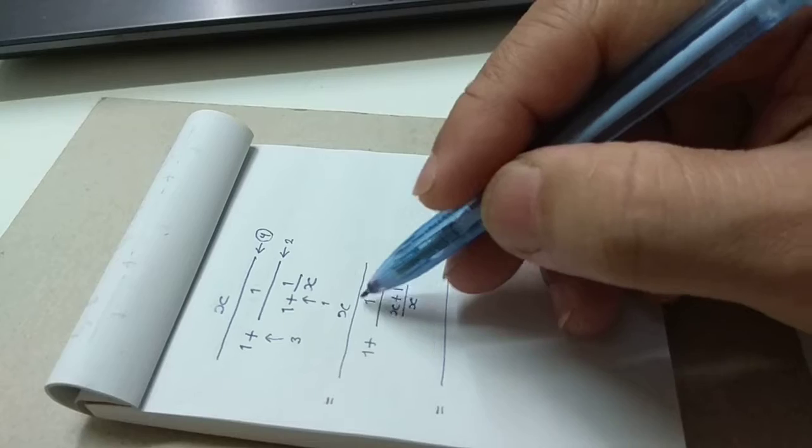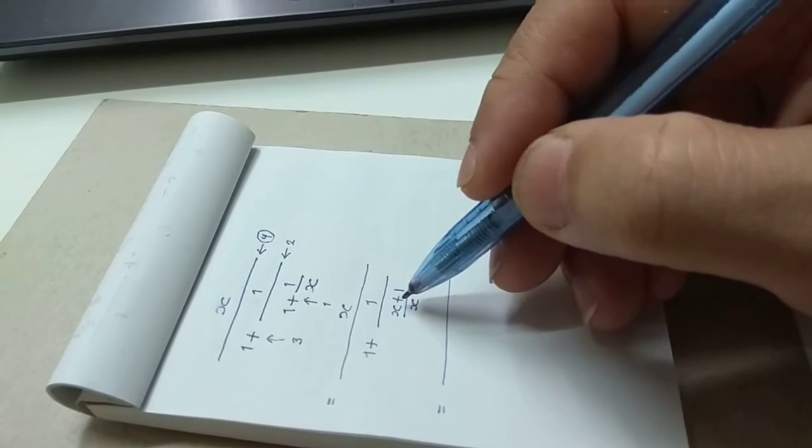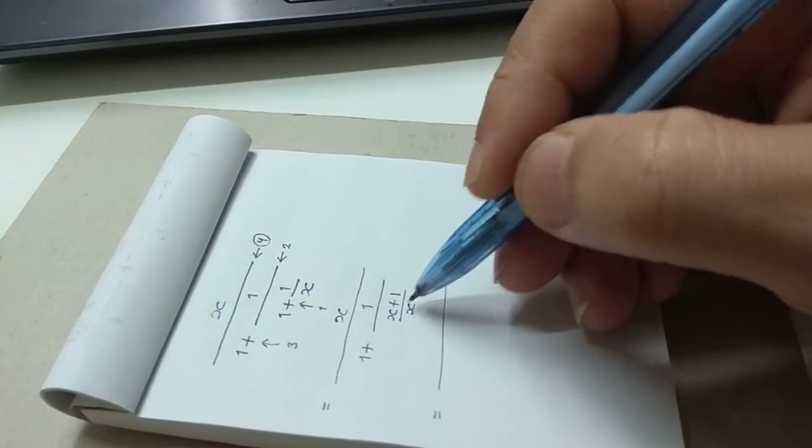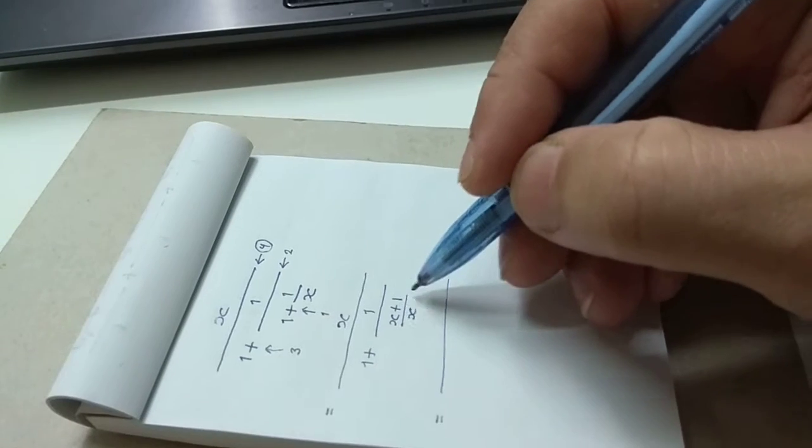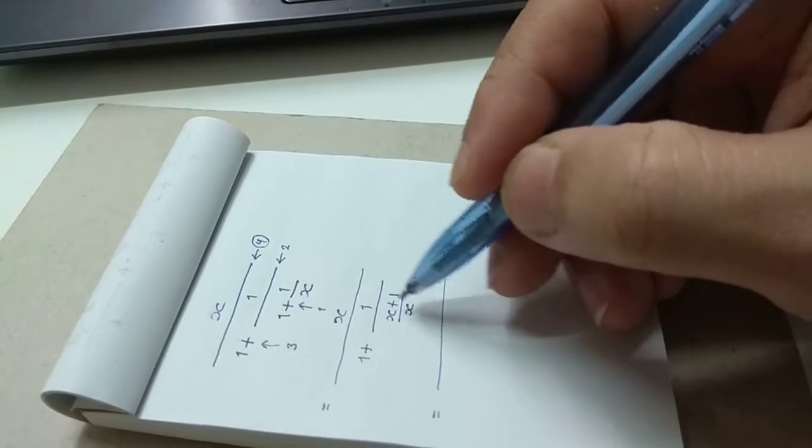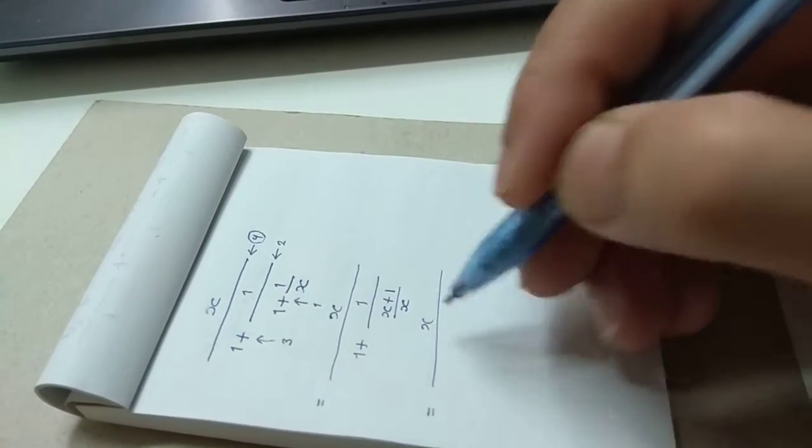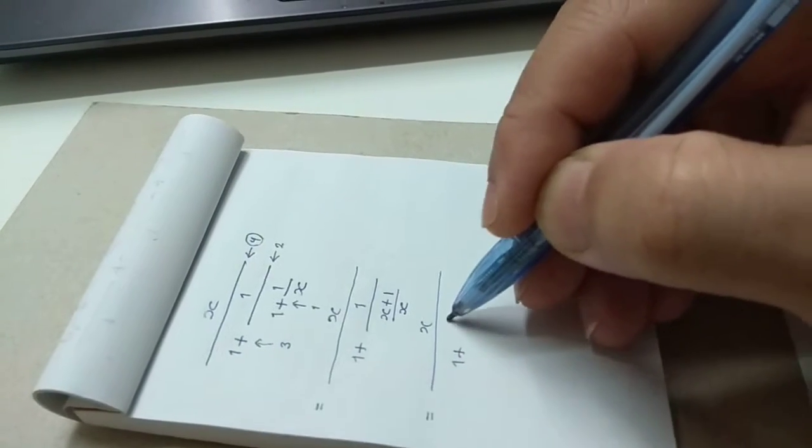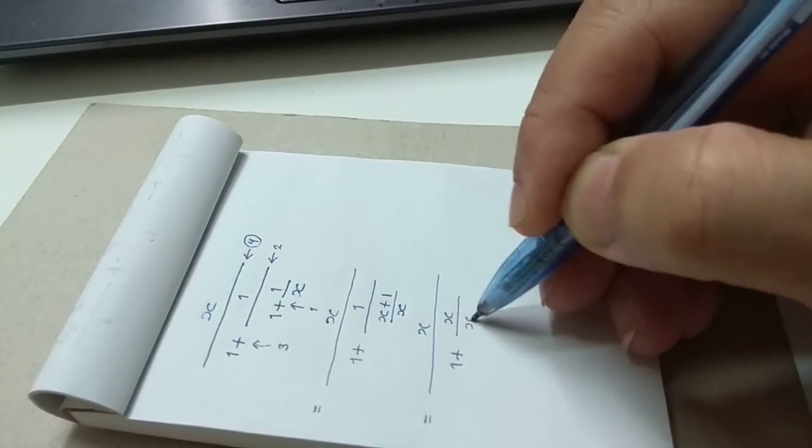Now, you divide 1 by this fraction. You divide 1 by this fraction, so you must turn it over. x over 1 plus x divided by x plus 1.